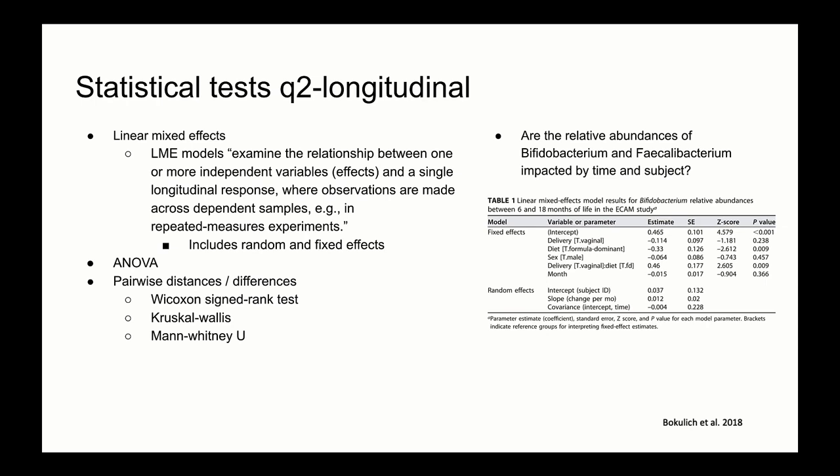So in answering our question: are relative abundances of Bifidobacterium and Faecalibacterium impacted by time and subject? The random intercept by subject ID suggests that baseline values for these abundances can vary by subject, which will now be accounted for in the LME model. A random slope by month of life suggests that the relationship between microbial abundance and time is not the same for each individual, which again can be accounted for in the model.